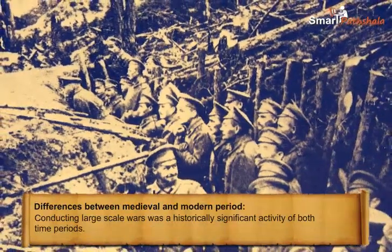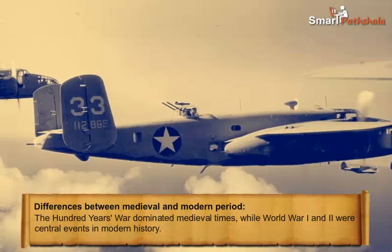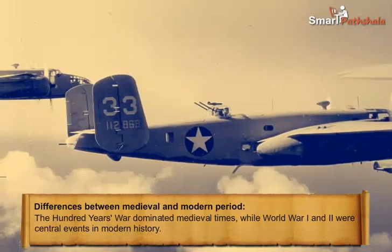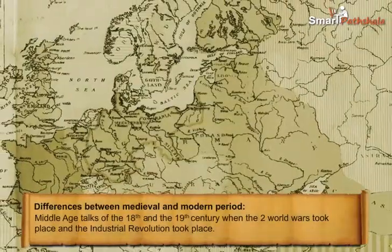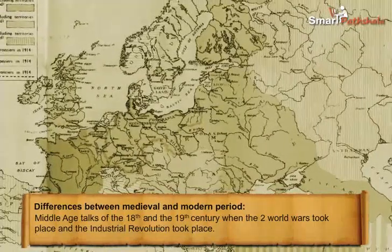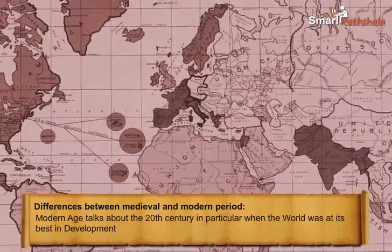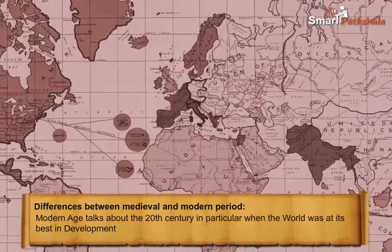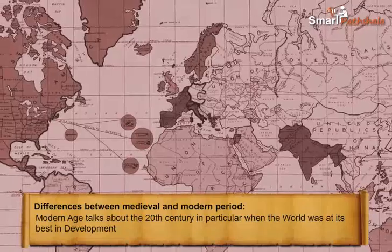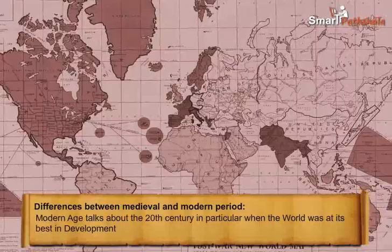Conducting large-scale wars was a historically significant activity of both time periods. The Hundred Years' War dominated medieval times, while the First and Second World Wars were central events in modern history. The Middle Ages encompass the 18th and 19th centuries when the two world wars and the Industrial Revolution took place. The Modern Age focuses on the 20th century in particular, when the world was at its best in development but also gave way to many problems worldwide.